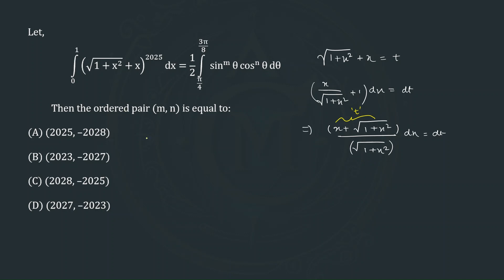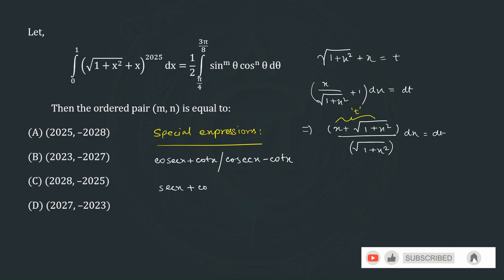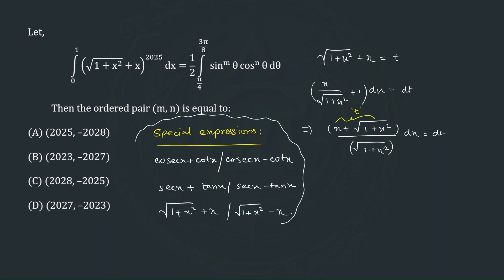Let's look at pairs of special expressions. We have: (cosec x + cot x) and (cosec x − cot x); similarly (sec x + tan x) and (sec x − tan x); and also (√(1+x²) + x) and (√(1+x²) − x). The special property of these pairs is that they are reciprocals of each other — if one equals t, the other automatically equals 1/t.